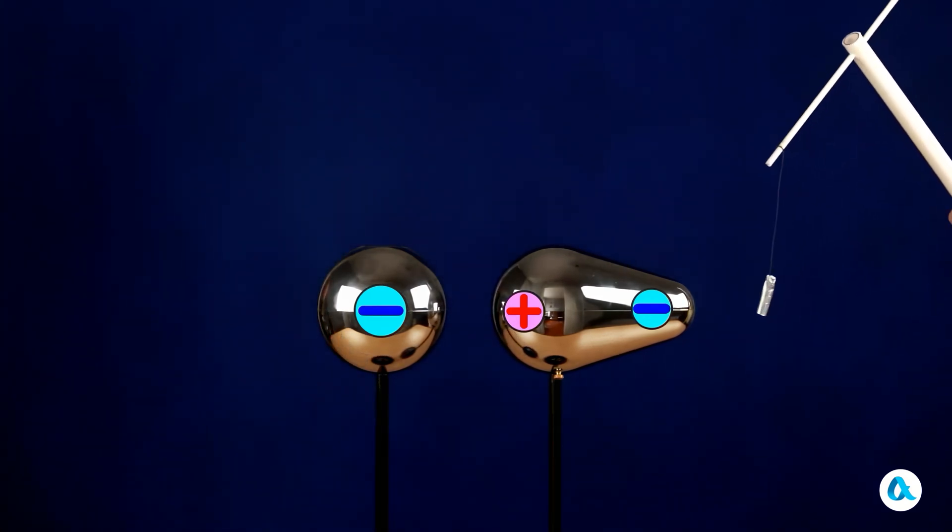Now the sleeve is attracted to the tip due to induction, then it touches it, becomes negatively charged, and repels from it.